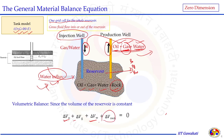Rock compressibility also causes the rock volume to change: at high initial pressure the rock is compressed, and as production causes pressure to decline, the rock expands to occupy the pore volume made available. So the rock also occupies some of the volume change happening in the reservoir. The sum of changes of all these volumes must equal zero. This mathematical equation is called the MBE — material balance equation or volumetric performance equation.